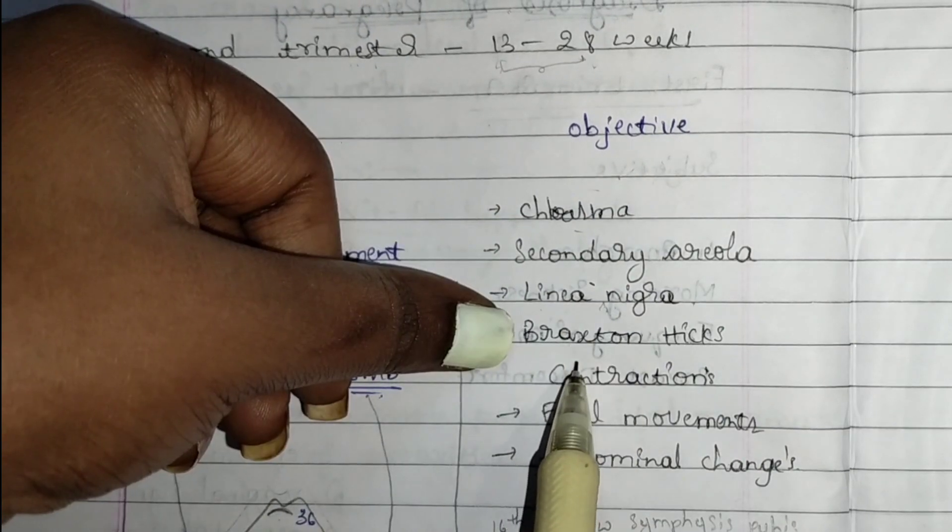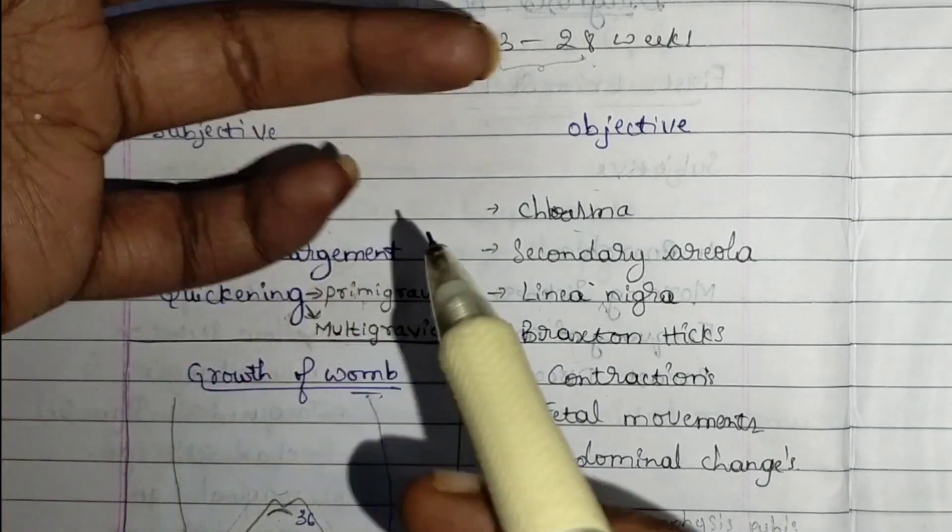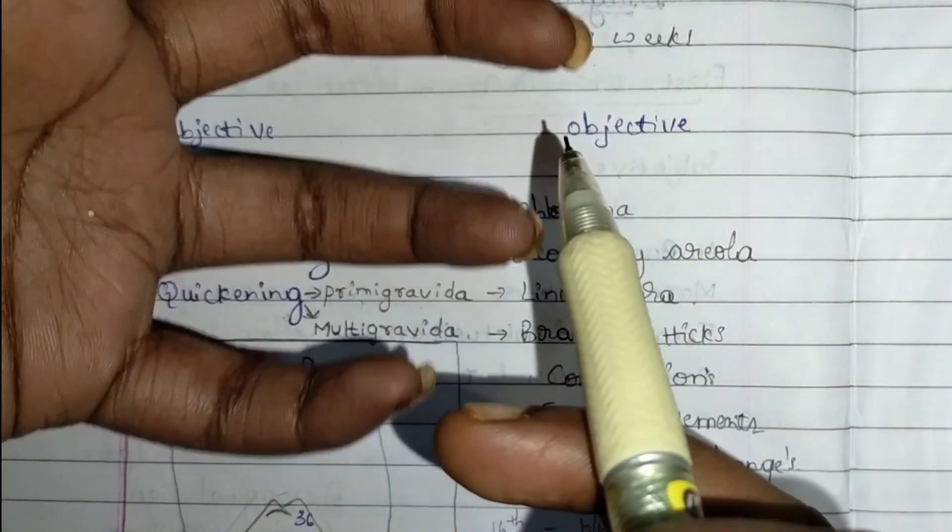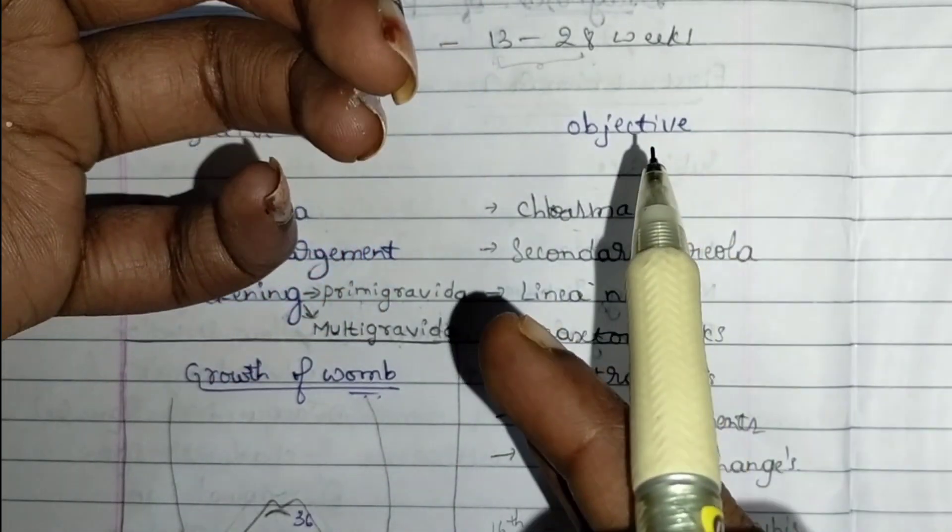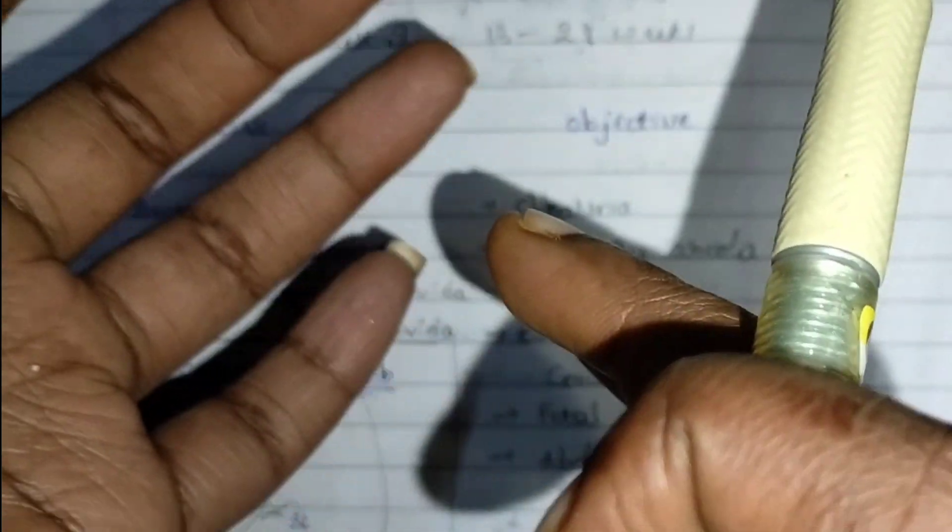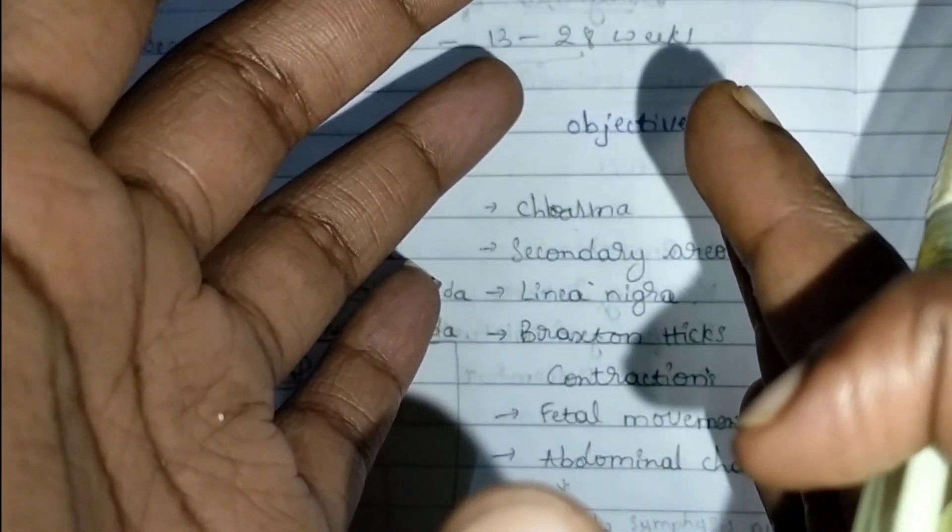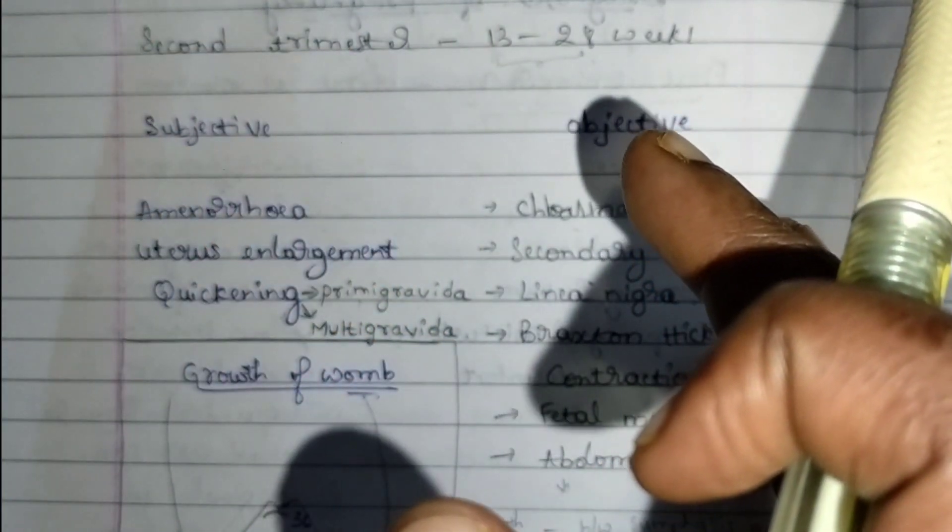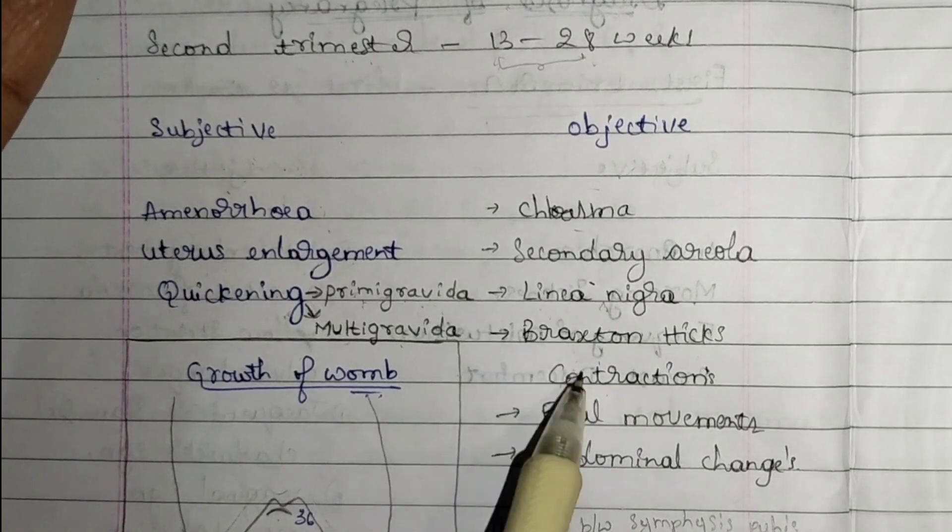Braxton Hicks contraction is irregular, infrequent, and painless contraction felt by the mother. It may last for 20 seconds or 10 seconds without any correct frequency or timing. This is also known as false labor pain or false labor contraction.